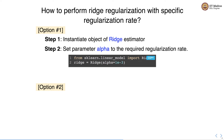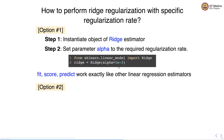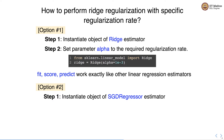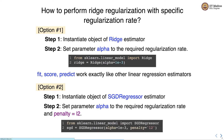We can import the Ridge class from the sklearn.linear_model module and instantiate the Ridge object with the value of alpha set to 0.0001. Since Ridge is an estimator, fit, score, and predict work exactly like any other linear regression estimator.